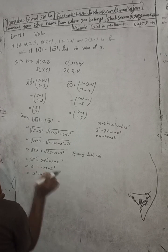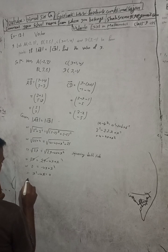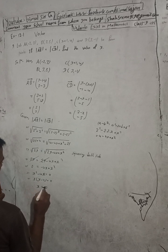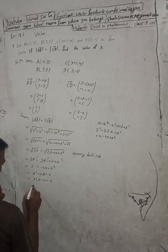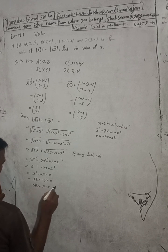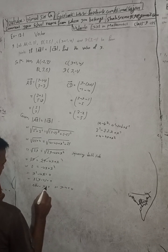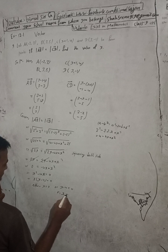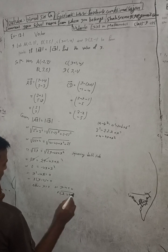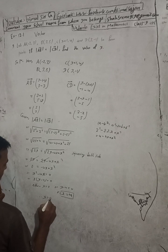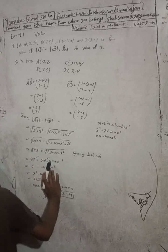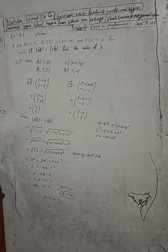Factoring x² - 4x = 0 gives x(x - 4) = 0. Therefore x = 0 or x - 4 = 0, which means x = 4. So we have two answers: x = 0 or x = 4. The answer in the book confirms x = 0 or x = 4.